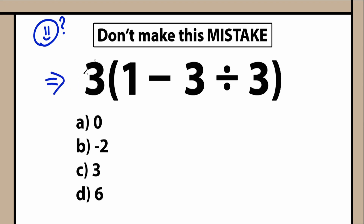We have three, right here in parentheses: one minus three divided by three. Seems pretty basic, seems pretty easy. However, many people are going to get this problem incorrect. So if you could do that without a calculator, write your solution down in the comment section.